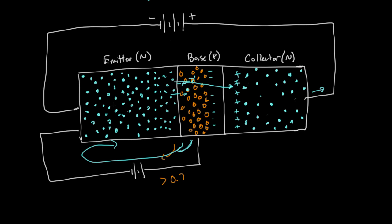Just a small current here results in a very large current going through the transistor, and that's how the transistor works as a current-controlled switch. This small current flow at the base turns on the transistor and allows a very large current flow from the emitter to the collector.